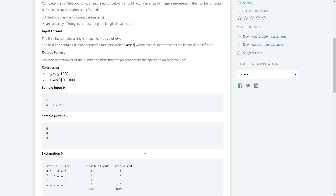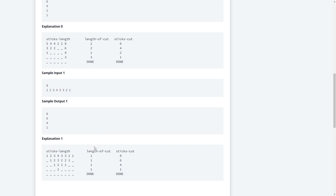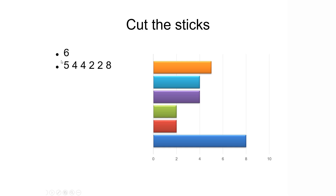Let us try to understand with a simple input. There are six sticks and this is the length. The first stick was of length 5, the second stick was of length 4, the third stick is again of length 4, the fourth and fifth sticks are of length 2, and the sixth stick is of length 8. We are supposed to find out the smallest one. The smallest or shortest is the fourth and fifth stick whose length is 2, and we need to cut every other stick by length 2.